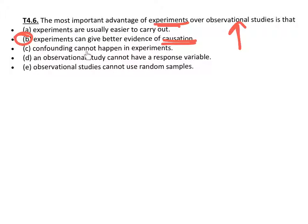It has nothing to do with letter A, that experiments are usually easier to carry out. Letter B, confounding cannot happen in experiments. It can if you don't control for that. If you don't design your experiment properly, confounding can happen. D, an observational study cannot have a response variable. They absolutely have a response variable. You're going to measure the outcome in an observational study that is the response variable. In E, observational studies cannot use random samples. We absolutely can use random samples in observational studies. The only thing an observational study says is a treatment was not randomly assigned to it.